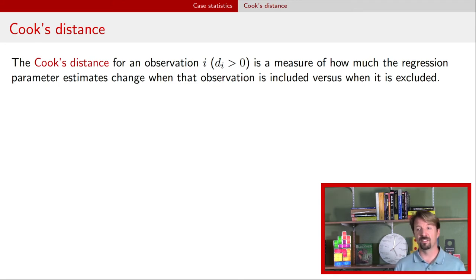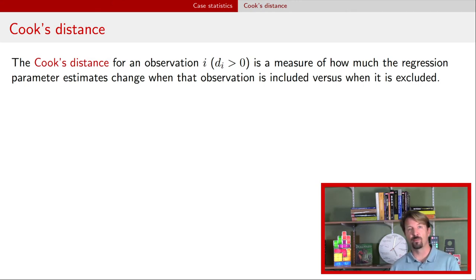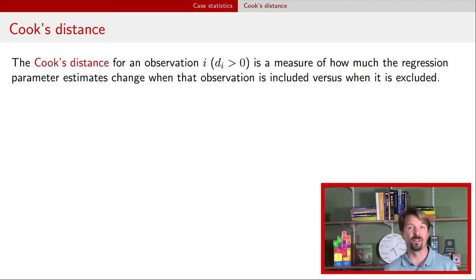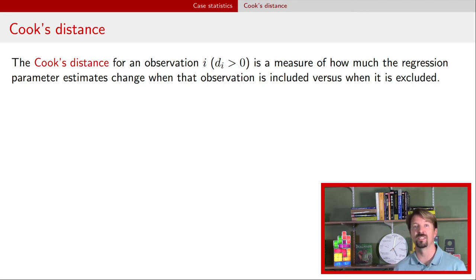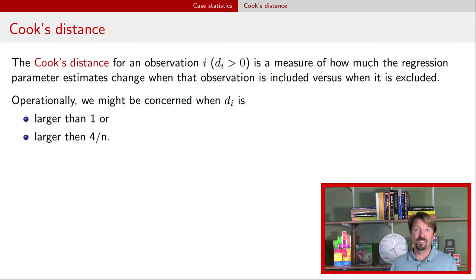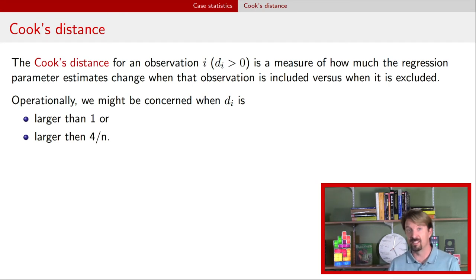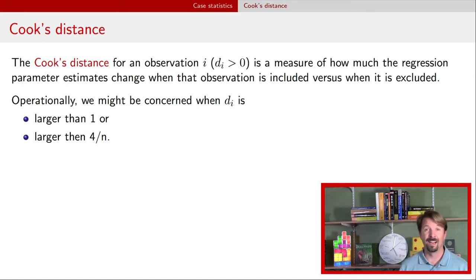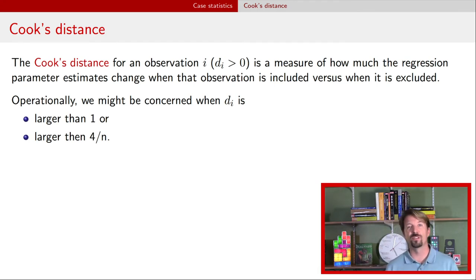The last key statistic is Cook's distance. This is a positive value that indicates how much the regression parameter estimates change when that observation is included or excluded from the model. If Cook's distance is large, it means those parameter estimates changed a lot, meaning that observation is having a large influence on the regression output. As a rule of thumb, if Cook's distance D is greater than 1 or greater than 4 over N (the number of observations), that's a cause for concern.